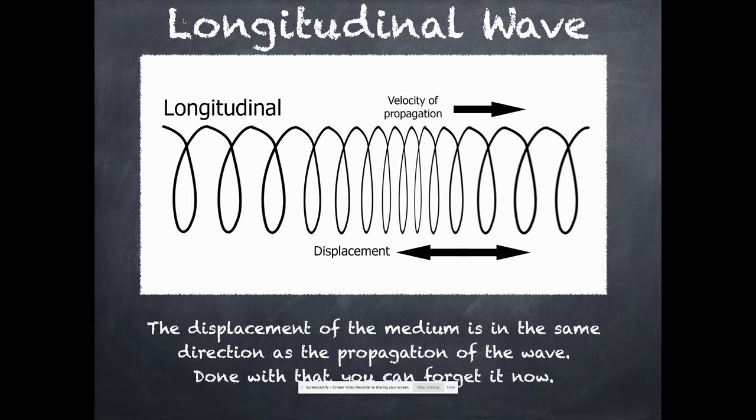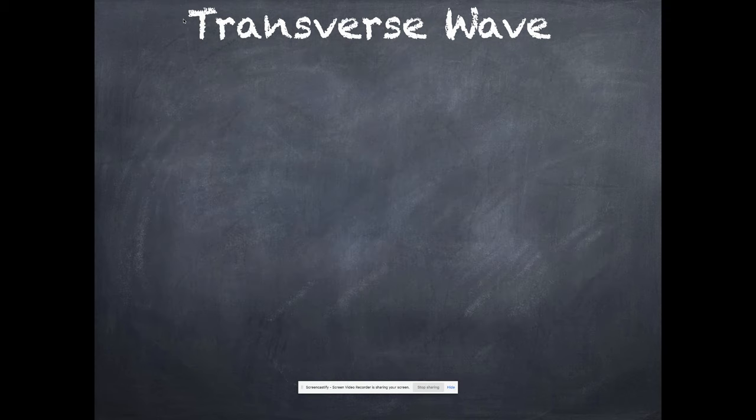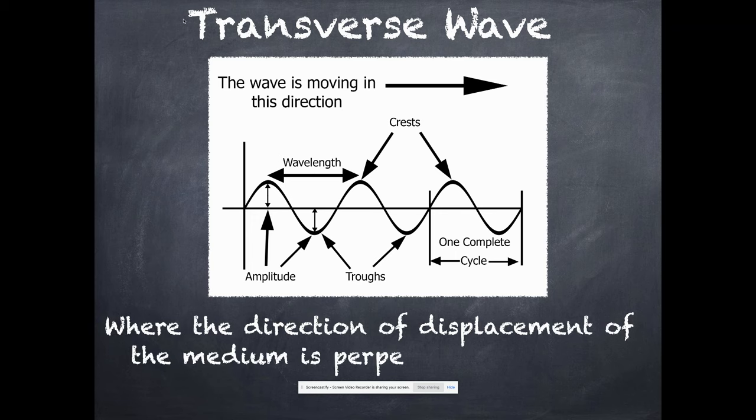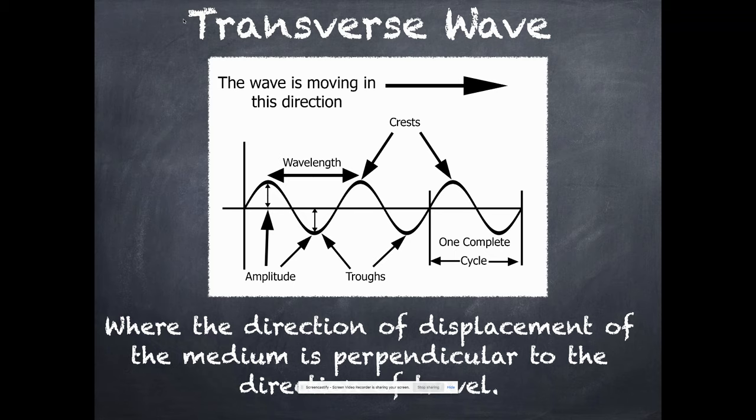The displacement of the medium is in the same direction as the propagation of the wave. And that's pretty much the last we need to think about longitudinal waves. They're not terribly relevant to a chemistry class. We're more interested in a transverse wave. A transverse wave goes up and down for its waving, but it moves at a right angle to that. The direction of displacement of the medium is perpendicular to the direction of travel.